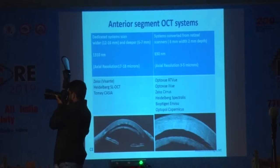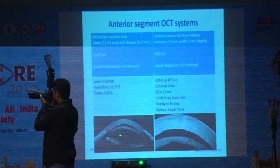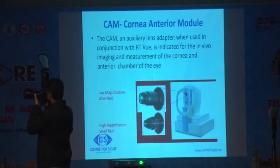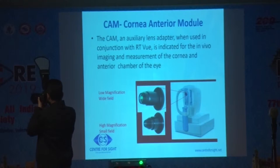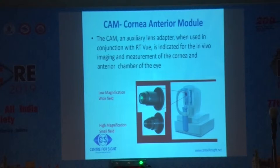This is the scan taken by RTVue OCT and this is the Visante scan — you can see the extent and resolution of the scans. We need add-on lenses for imaging the anterior segment with OCT devices designed primarily for retinal imaging. In RTVue OCT, we have the Cornea Anterior Module, which is of two types — CAM-L and CAM-S — providing various scan options.